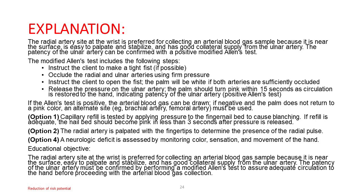The modified Allen's test includes the following steps: instruct the client to make a tight fist if possible; occlude the radial and ulnar arteries using firm pressure; instruct the client to open the fist (the palm will be white if both arteries are sufficiently occluded); release the pressure on the ulnar artery. The palm should turn pink within 15 seconds as circulation is restored, indicating patency of the ulnar artery (positive Allen's test). If the test is positive, the ABG can be drawn; if negative (palm does not return to pink), an alternate site such as the brachial or femoral artery must be used.